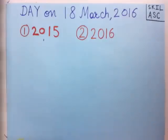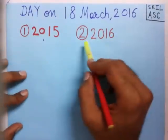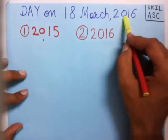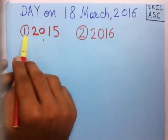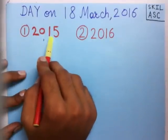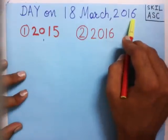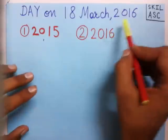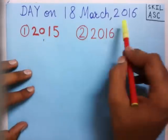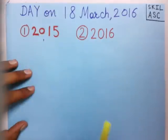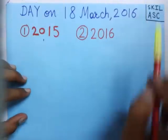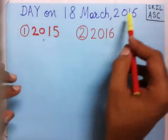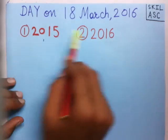If you notice, the second part is the same as the given year 2016, and the first part, 2015, is one less than the given year. So the second part must be the same as the given year and the first part must be one less than the given year. Now we have two parts and our aim is to find the number of odd days for this date.